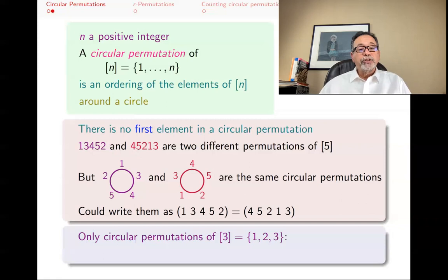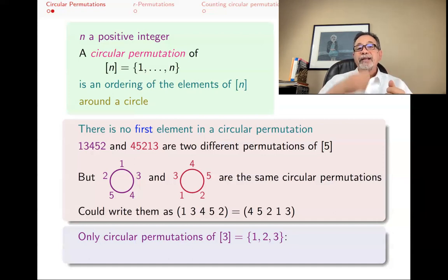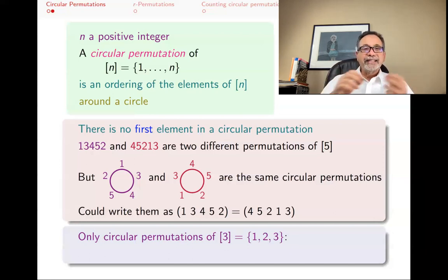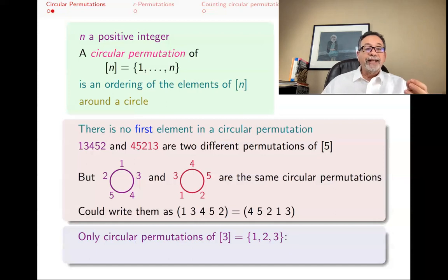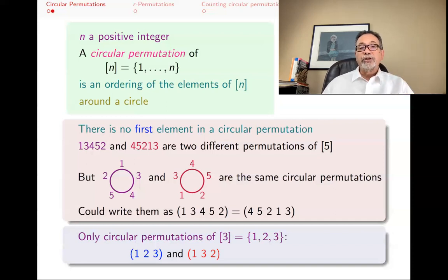As an example, let's look at circular permutations of {1,2,3}. How many of them are there? Note that actual permutations of {1,2,3}, there are 3 factorial = 6 of them. But since there's no beginning in a circular permutation, you might as well always start with 1. Then there are only two choices: you either have 1,2,3 or 1,3,2. So there are two circular permutations of bracket 3, whereas there are six linear permutations of bracket 3.